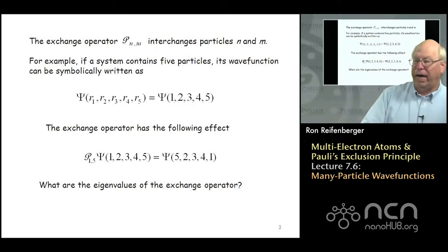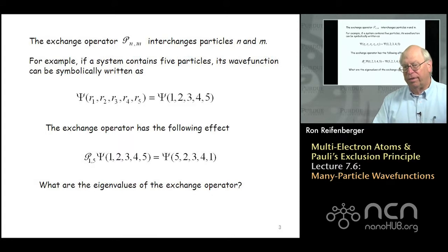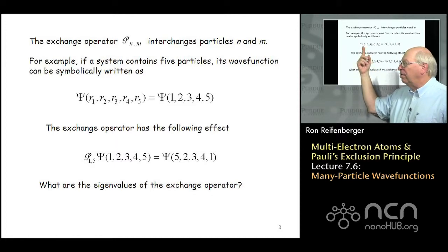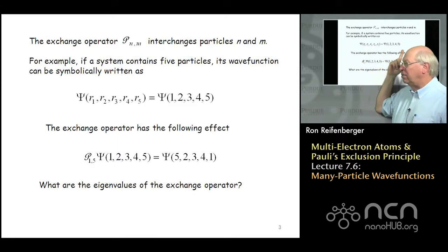For instance, if I just execute this exchange operator on a five-particle wave function, just to be specific, I say I've got a system—it could be an infinite square well, it could be an atom—there's five electrons in that atom. Each electron has a different position r1, r2, r3, r4. I can write that in shorthand notation as follows.